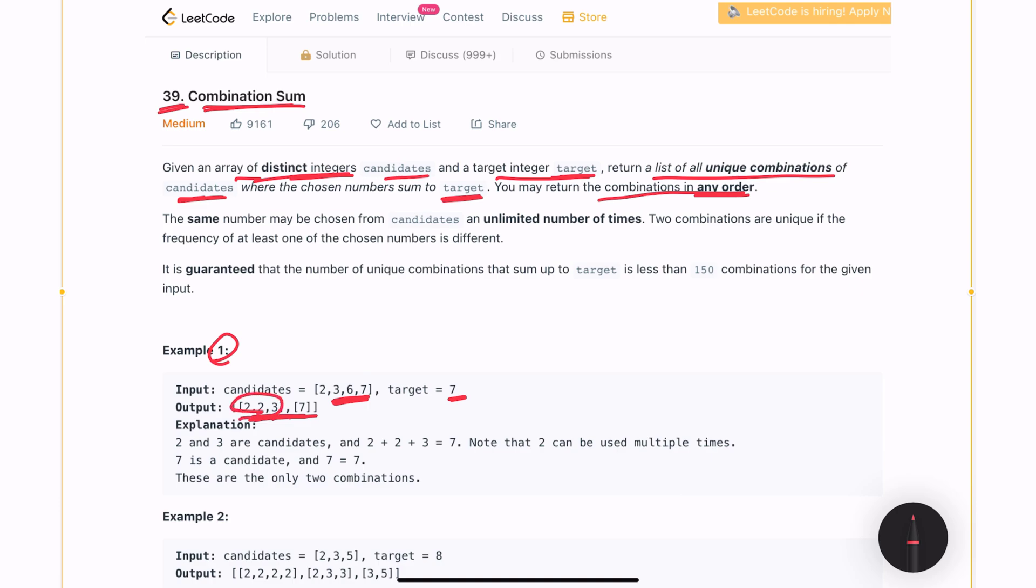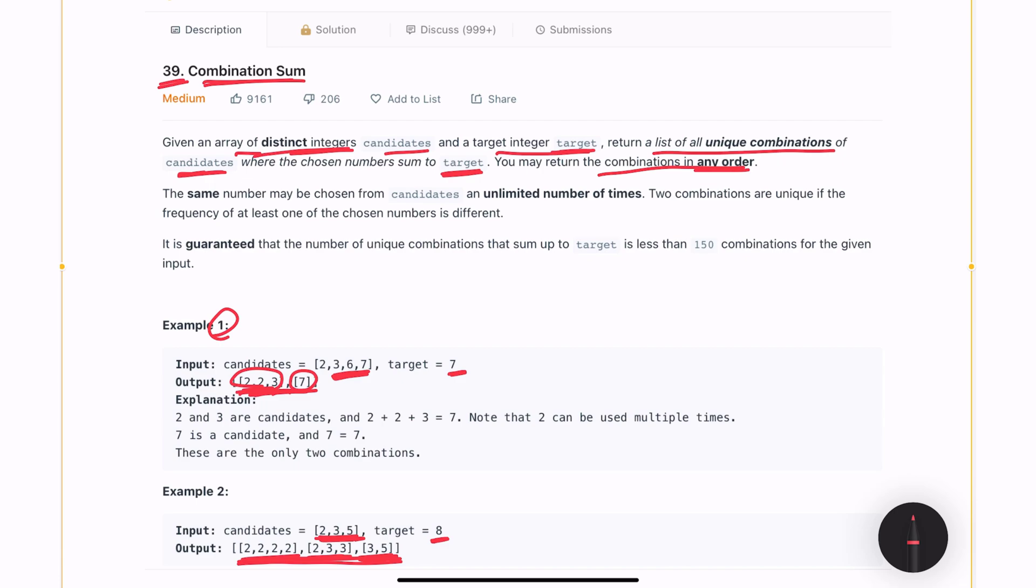One is 2, 2, 3 and the other is just 7. We are allowed to repeat the same number multiple times. Hoping that you understood this problem statement, let's switch to whiteboard and talk about how this can be solved.